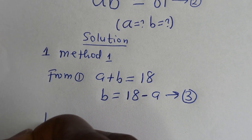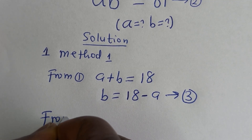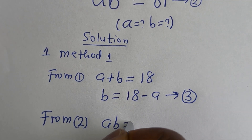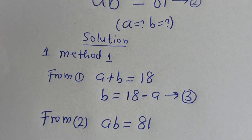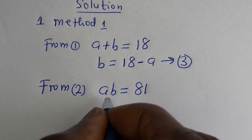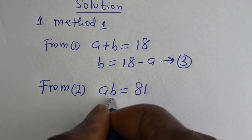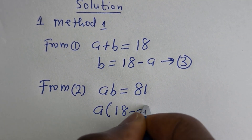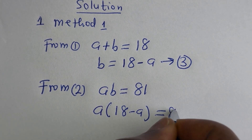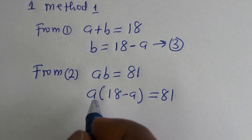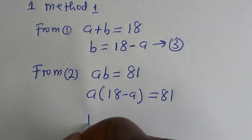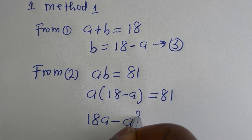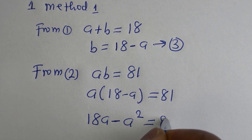Then from equation 2, AB is equal to 81. Substituting equation 3, we have A multiplied by (18 minus A) is equal to 81. Let us open the bracket: A multiplied by 18 is 18A, minus A multiplied by A is A squared, is equal to 81.